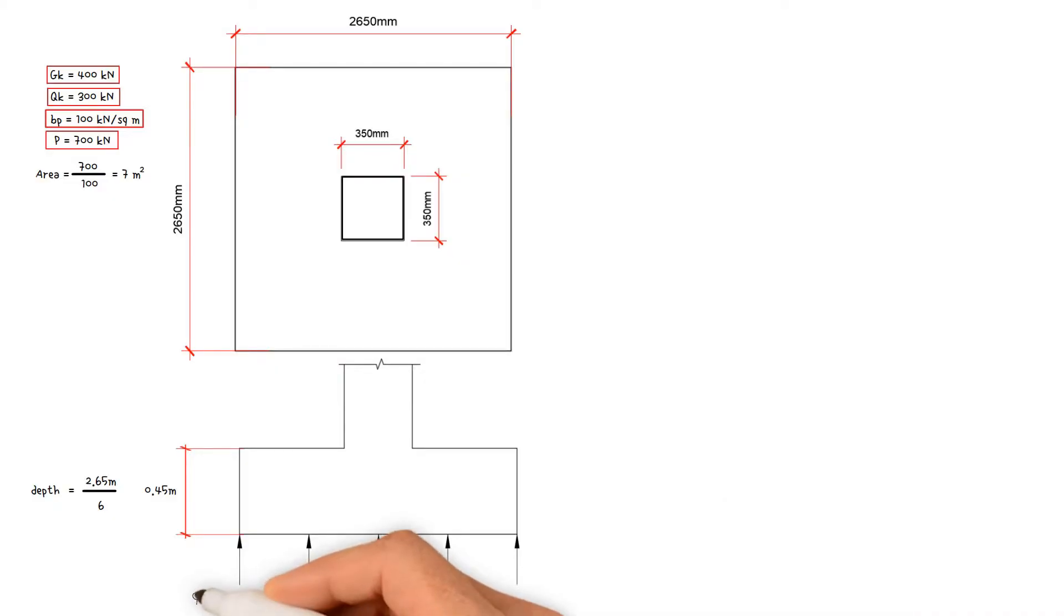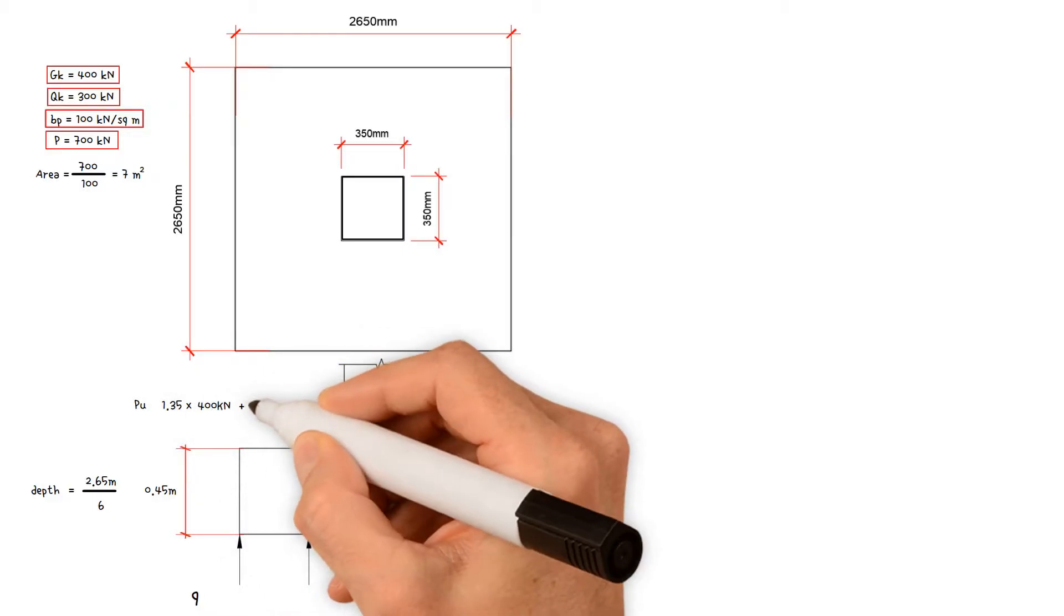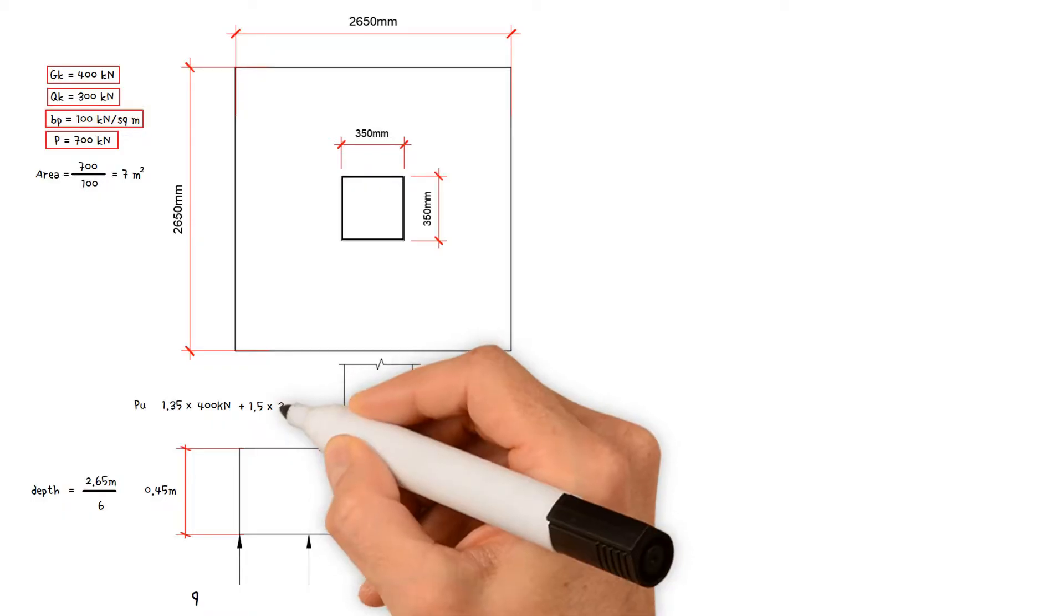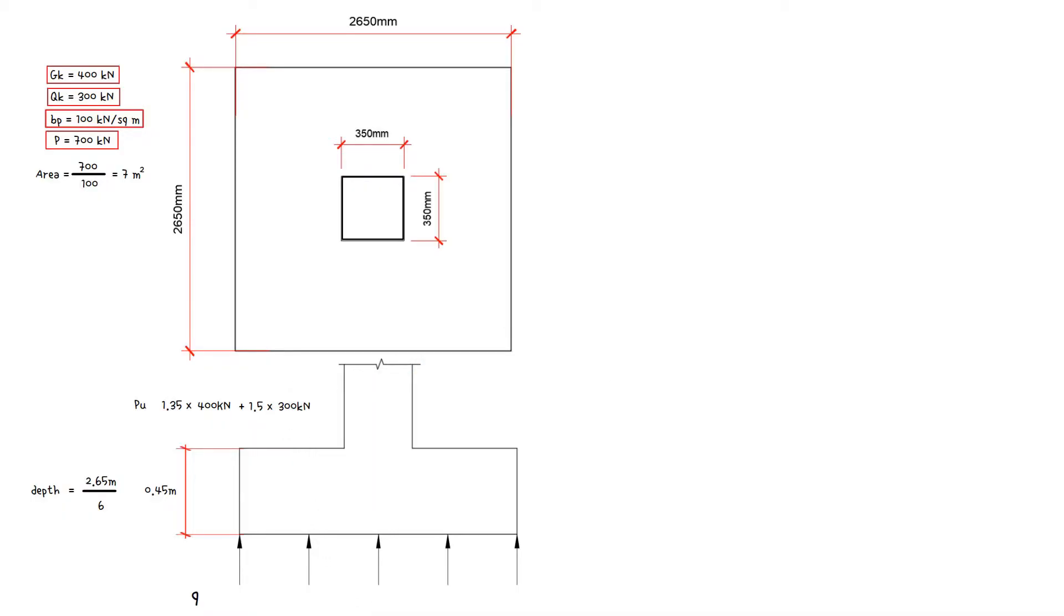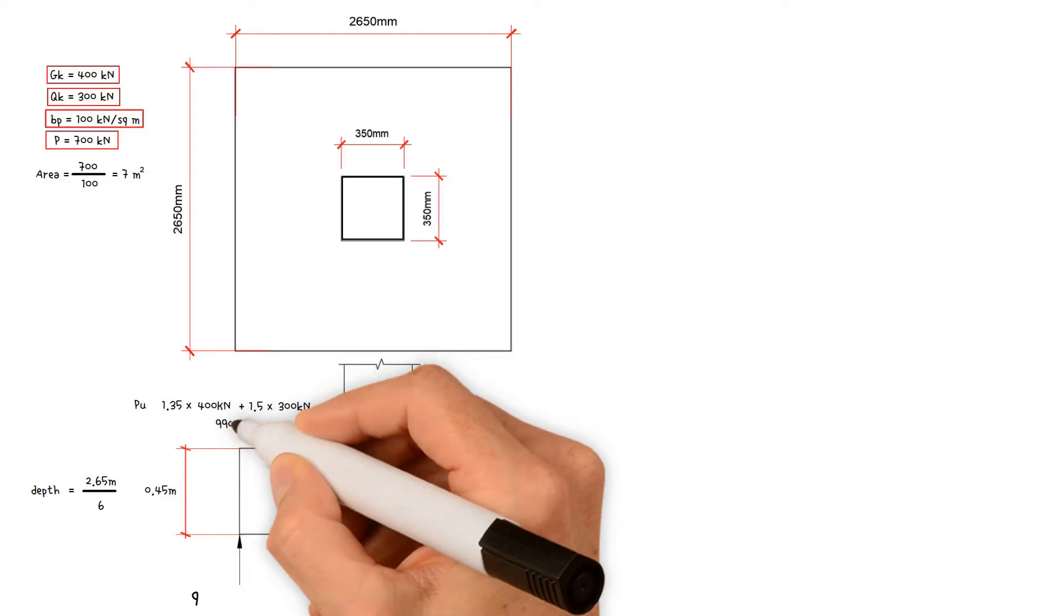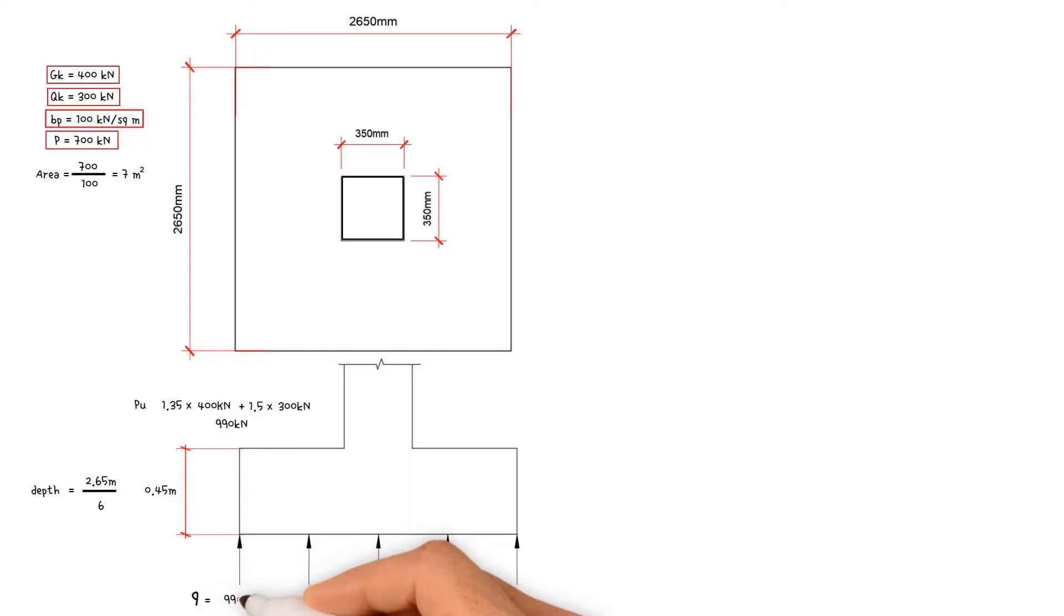The value of this pressure is the factored column load, which is 1.35 times dead load 400 kN plus 1.5 times imposed load 300 kN, giving us total design load of 990 kN, then divided by the plan area of the pad 2.65 squared. This results in a ground pressure of 141 kN per meter squared.